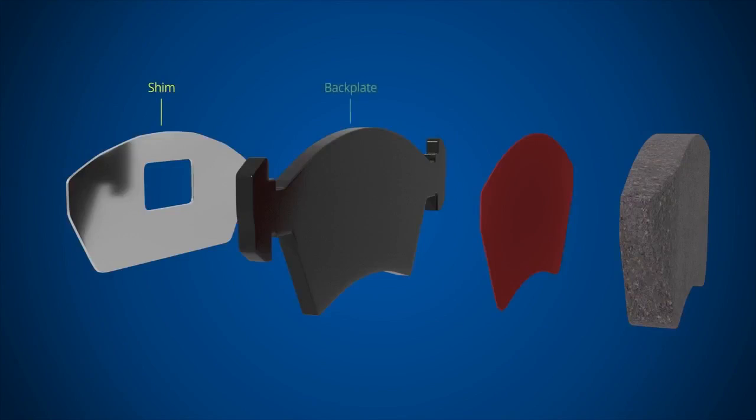Next, we have the steel backplate, which provides the rigid base for the friction material and solid mounting to the caliper piston and carrier. An underlayer sandwiched between the backplate and friction material bonds the two together and acts as a thermal barrier to stop heat being transferred from the pad to the caliper.